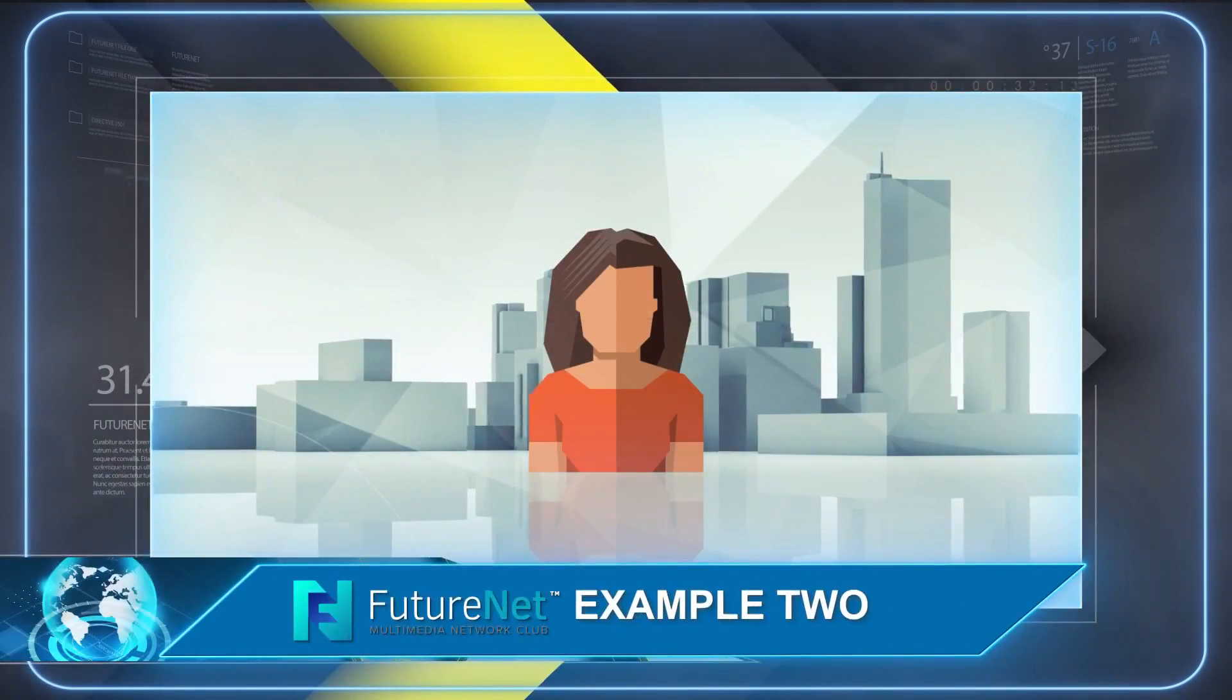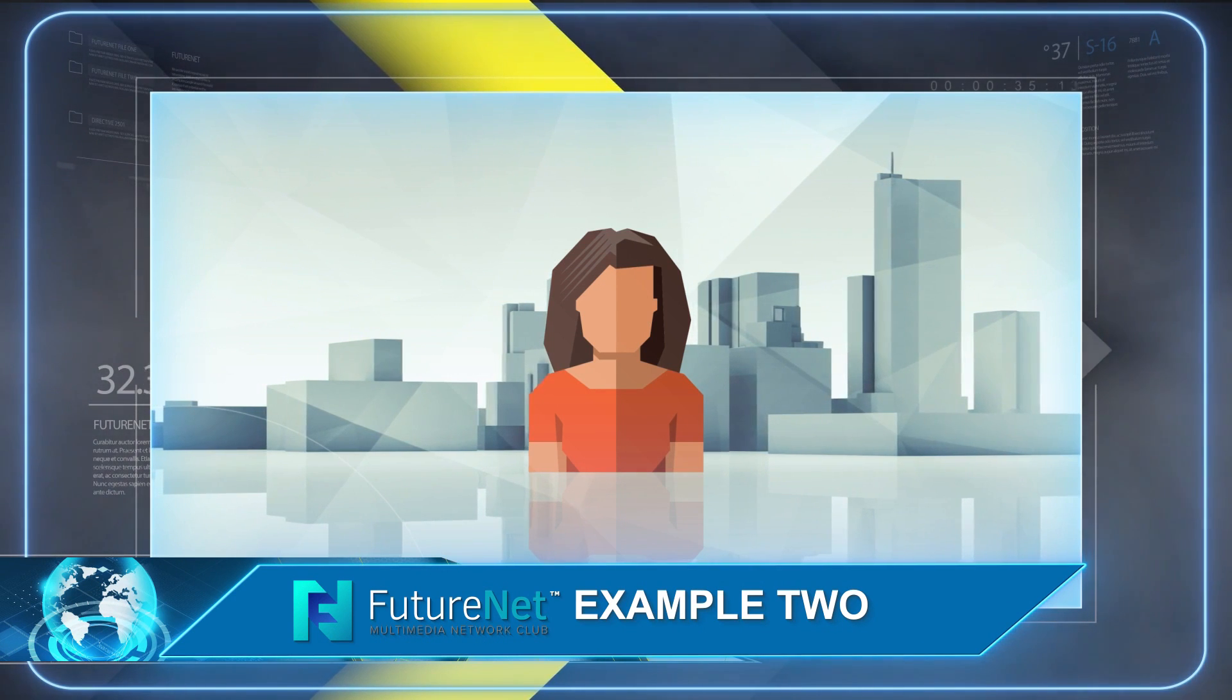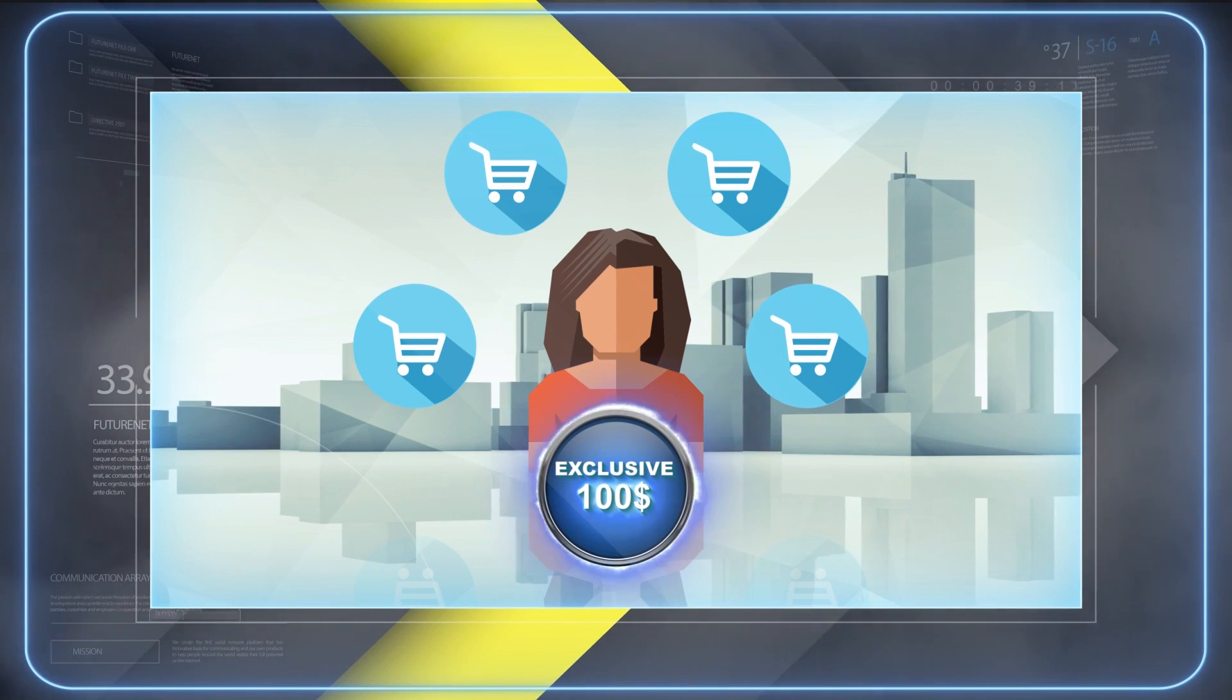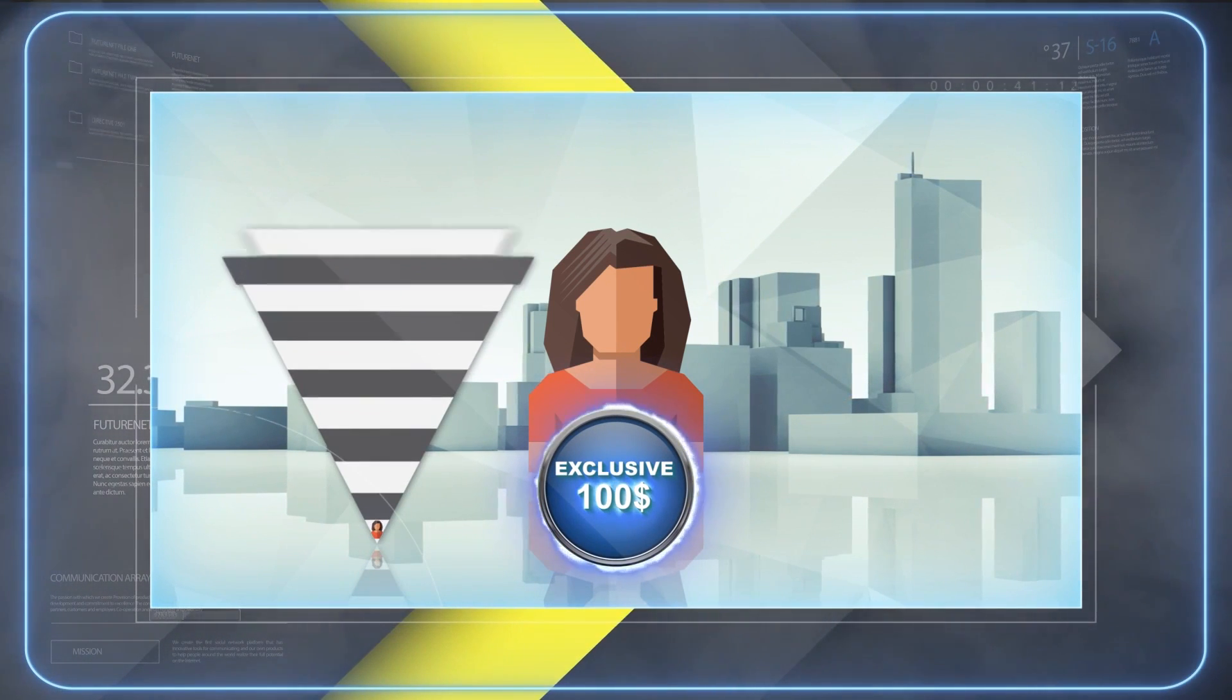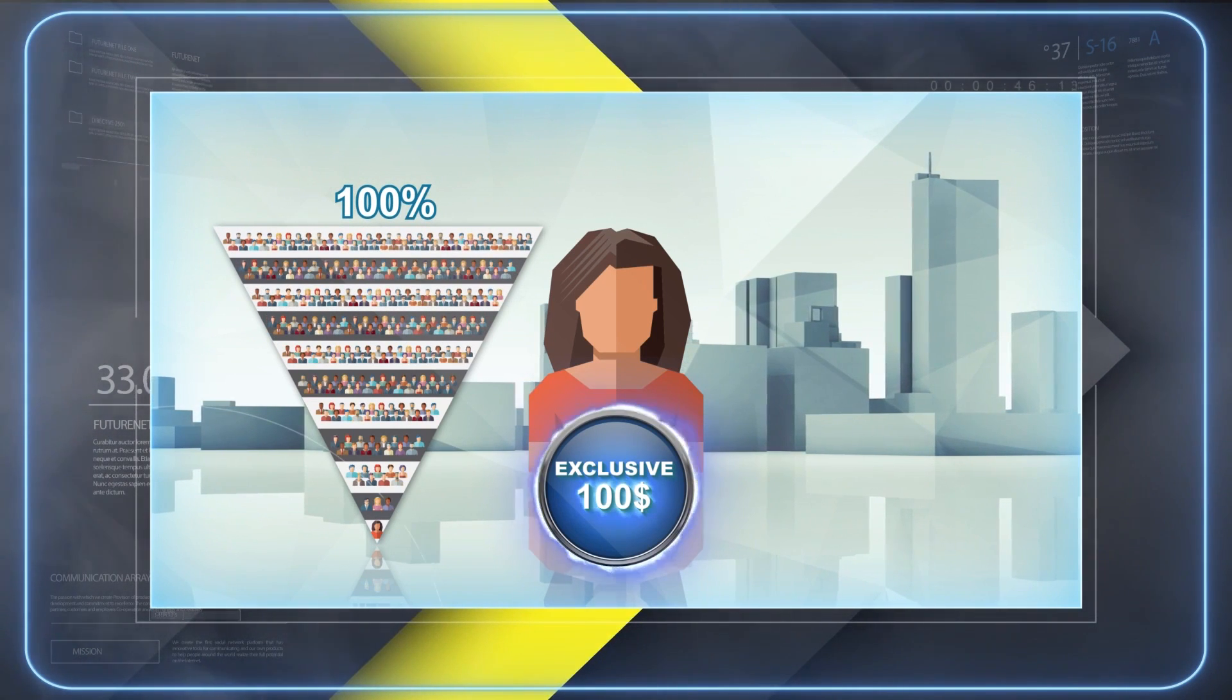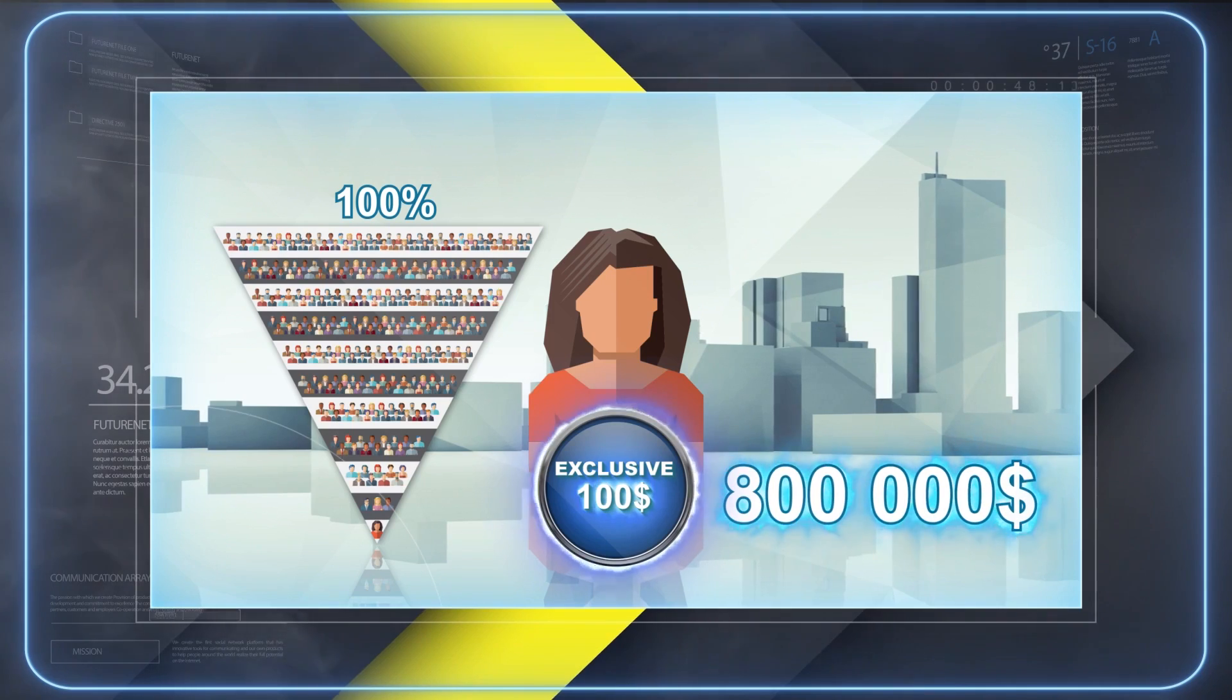In the second example, we will present to you the earning possibilities after purchasing the products at the exclusive level. Also here, we assume that your structure will be gradually filled in 100%. Then your potential at the exclusive level will amount to $800,000.